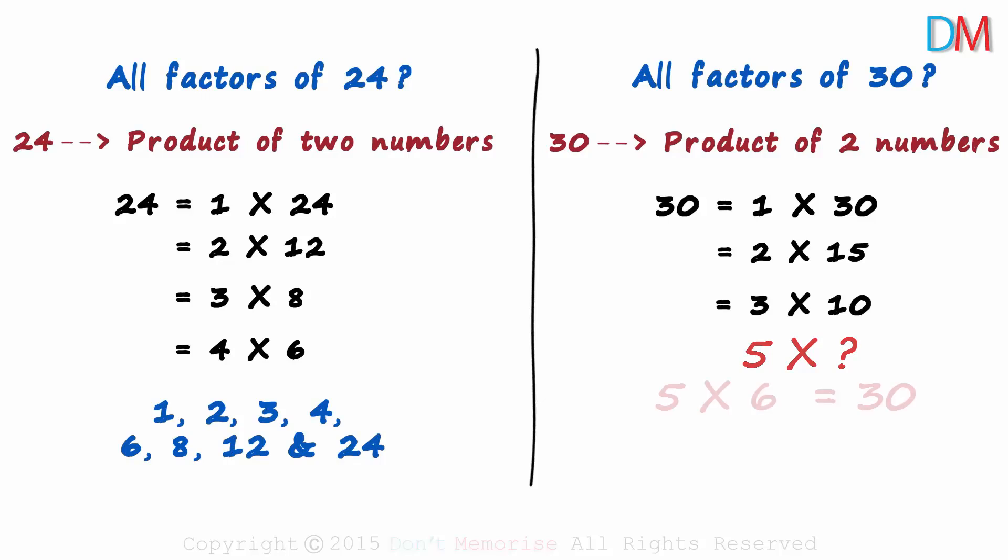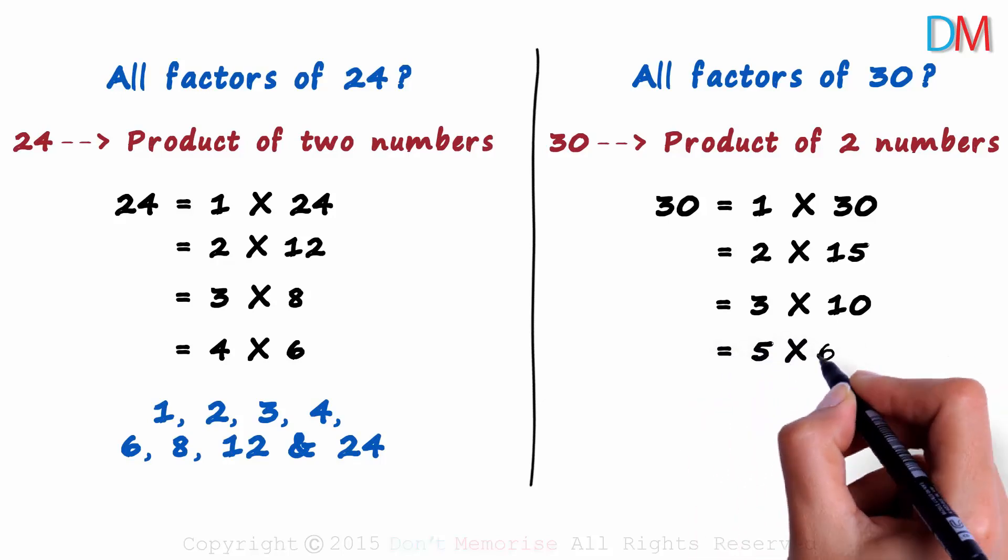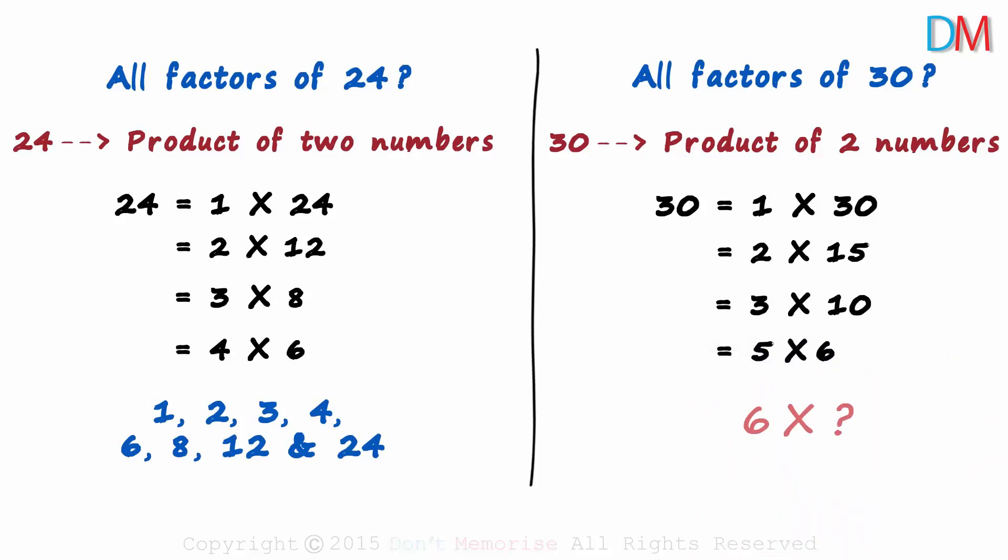What about 5? Yes, 30 is divisible by 5. And the product can be written as 5 multiplied by 6. The next number is 6 which is already covered here. And the numbers after 6 are covered here. That's when we know that we have exhausted all possibilities.